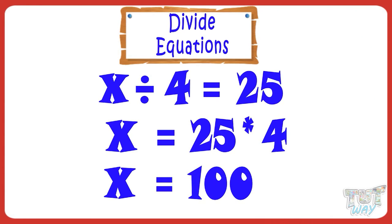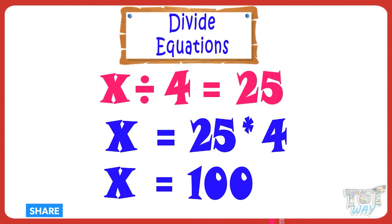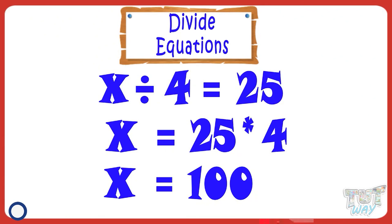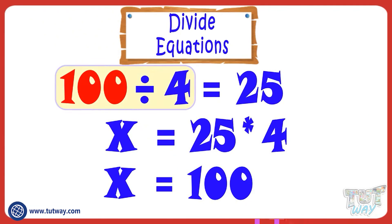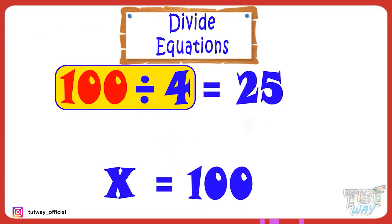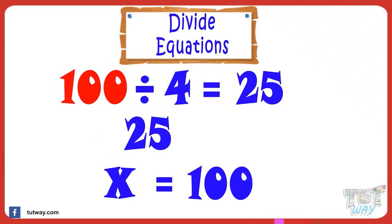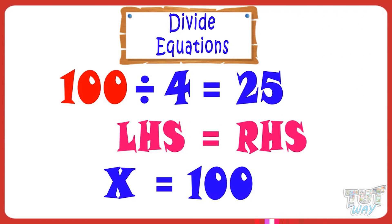We can cross-check our answer by putting the value of X in our original equation. Our original equation is X divided by 4 equals 25, and we found X equals 100. Now, putting the value 100, we get 100 divided by 4 equals 25. Check: 25 equals 25. So LHS equals RHS. Hence, the value of X we found is correct.